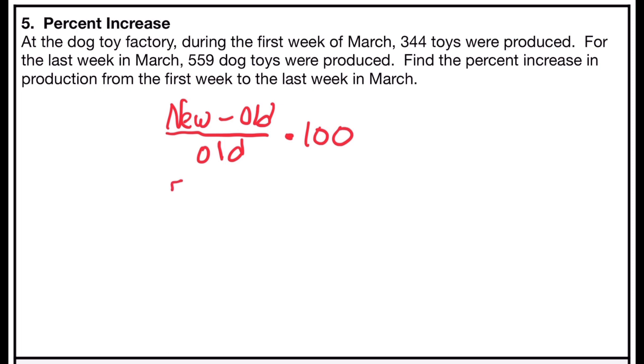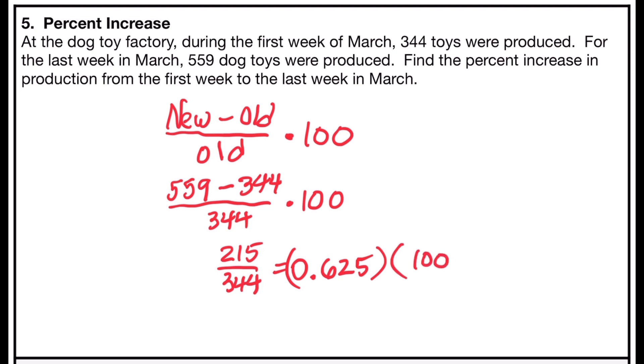So the new amount is 559 dog toys, minus the old or original amount, which is 344 dog toys, divided by 344, which was the original amount. And after I find that value, I'll multiply it by 100. So if you punch 559 minus 344 into a calculator, you get 215. So 215 divided by 344 will give you 0.625. And the last step, then, is to take that decimal number and multiply it by 100 to express it as a percentage. When you multiply by 100, you're changing two place values. So we'll multiply and change two place values and find out that the percent increase is 62.5%.